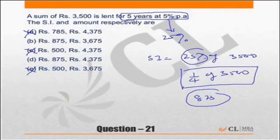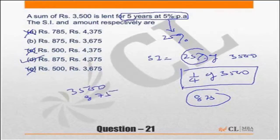And what should be the amount? The amount should be — the answer has to be B. Because 3500 is the principal plus 875 interest, the answer will be 4375. Choice B showing 4300 has to be incorrect. So the correct answer is B.